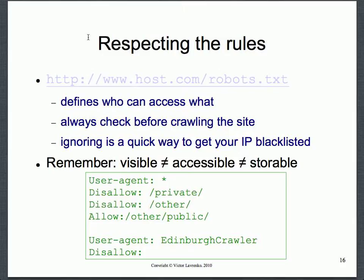When you write a crawler you create a name for it. There are well-known names for major crawlers — Googlebot for Google, and crawlers for Yandex and Bing. Each known crawler looks for its own name in the list to figure out which rules apply to it. A star means rules apply to all crawlers. There will be a sequence of allow and disallow entries — for example, anything under 'private' is disallowed, anything under 'other' is disallowed except 'other/public', which you can crawl.